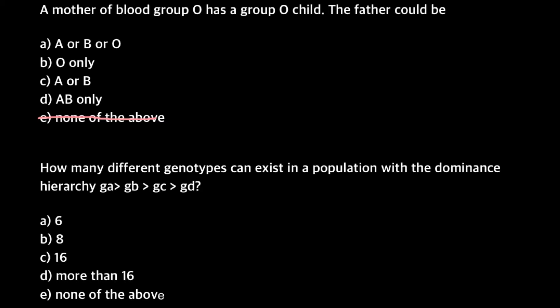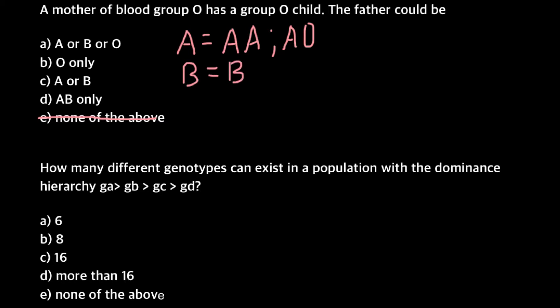We have blood group A — phenotype A — and this consists of two genotypes: AA and AO. We also have blood group B, and blood group B phenotype can be made by two genotypes: BB and BO. We also may have blood group AB, which is also a phenotype, and this can be made by only one genotype: AB.